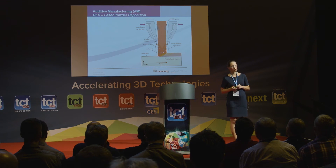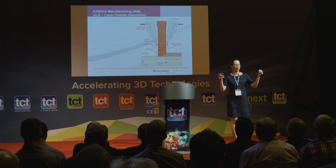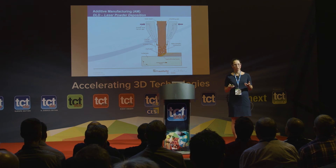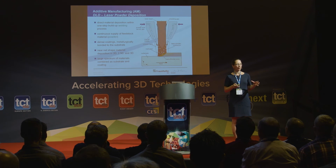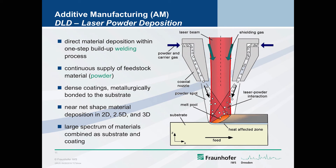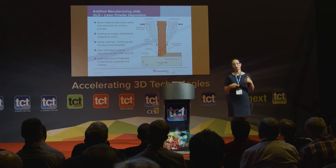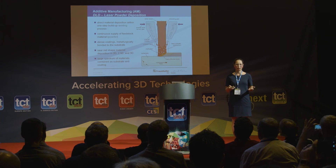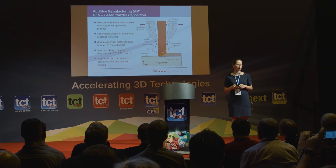For laser powder deposition, the powder is transported directly into the laser beam, melted onto the substrate — essentially a welding process. You go from welding and can now make 3D parts, evolving from surface cladding into printing 3D parts. This gives you a high range of available materials, much broader than powder bed processes, as well as dense coatings and a large material spectrum.